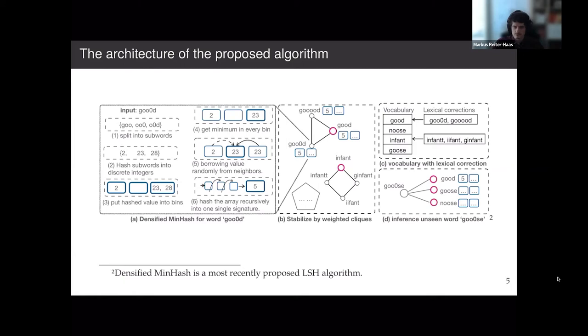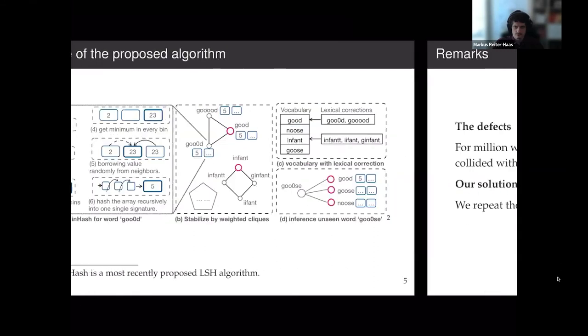So we propose a stabilization algorithm, which means we are going to run the first step several times, for T times, and then map all of them to the graph. Now we have a different meaning for the edge weight. The edge weight represents the number of times these two words are hashed to the same bucket. We can safely say that if these two words have a high edge weight in between, then they tend to be similar. If these words have a really low edge weight or no edge weight, then they should be distinct. This stabilization algorithm allows us to attain good performance on the experimental part.